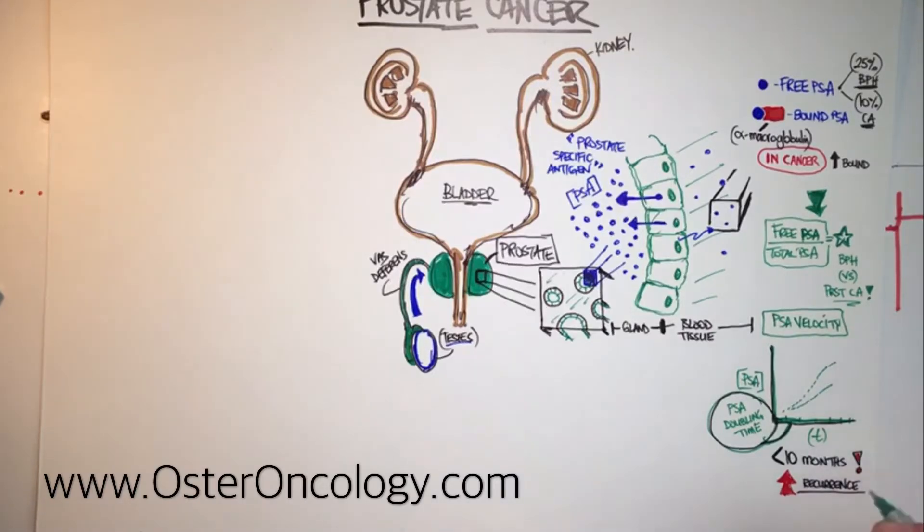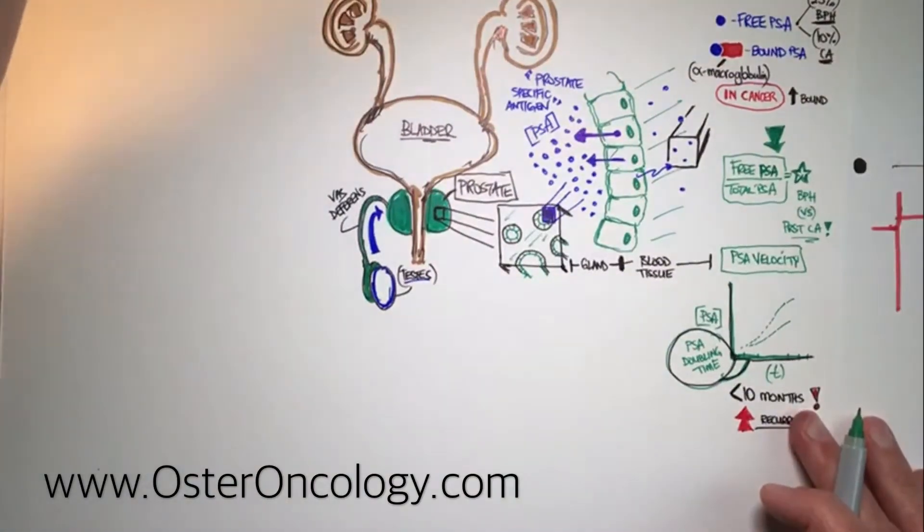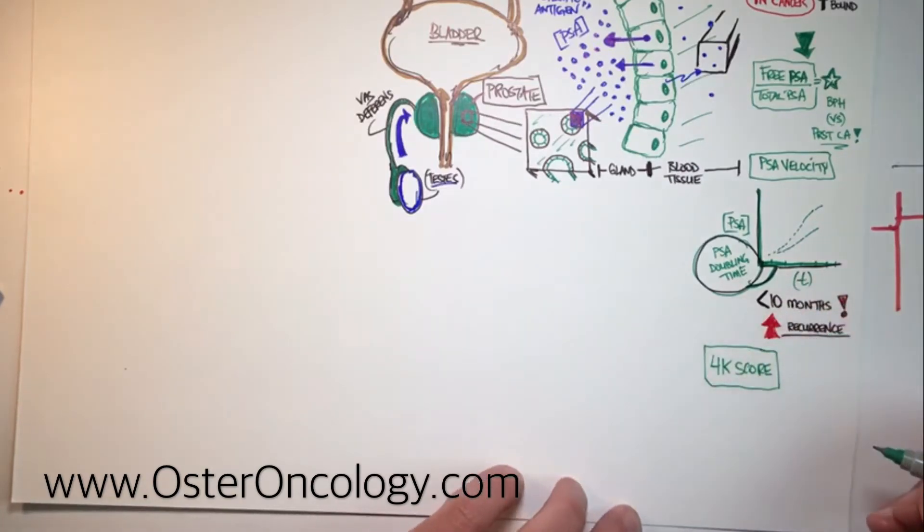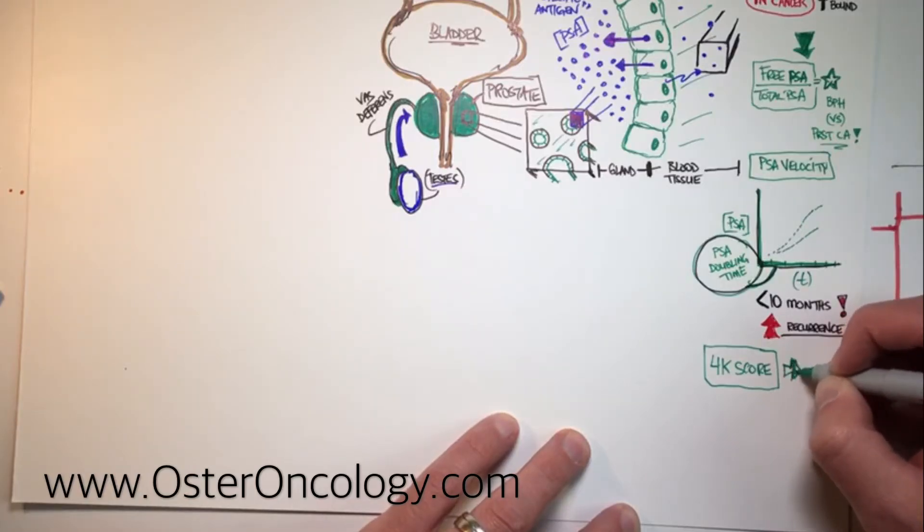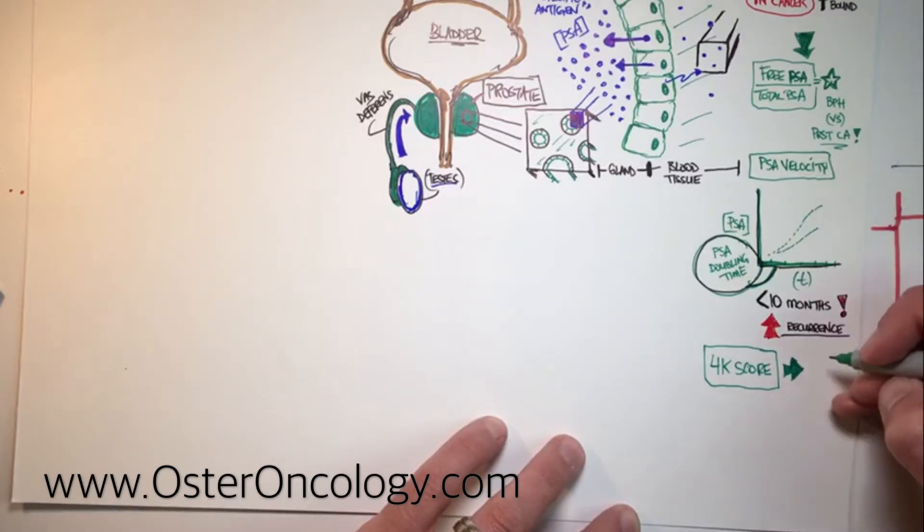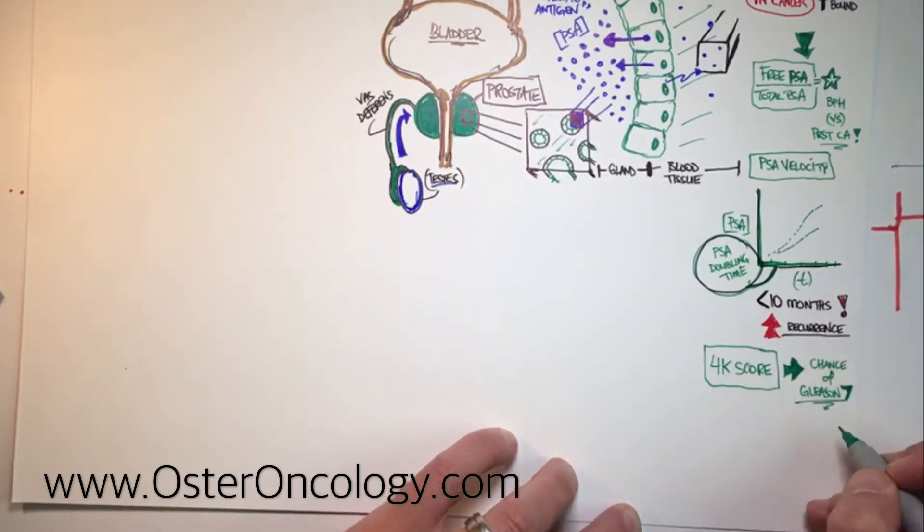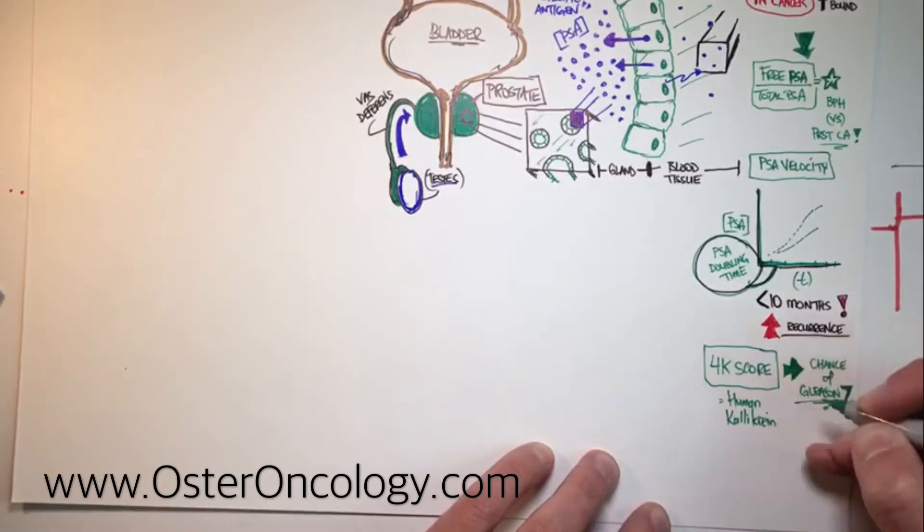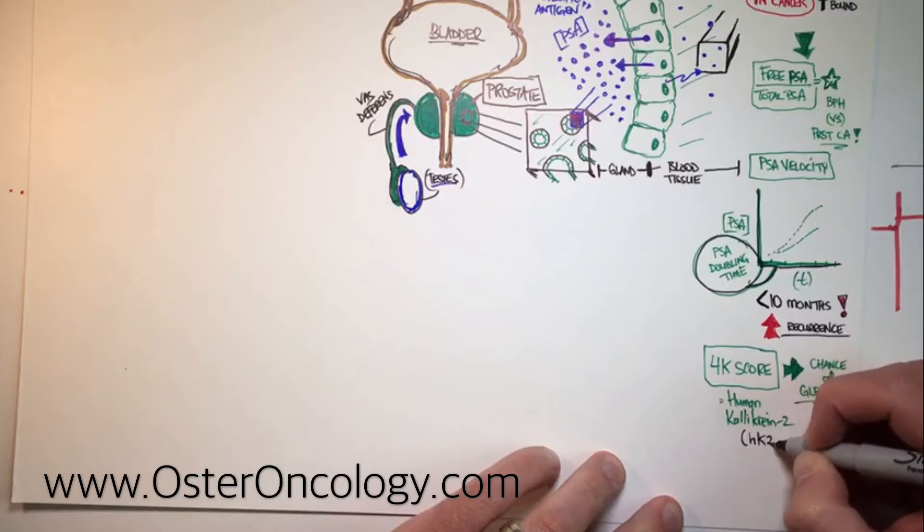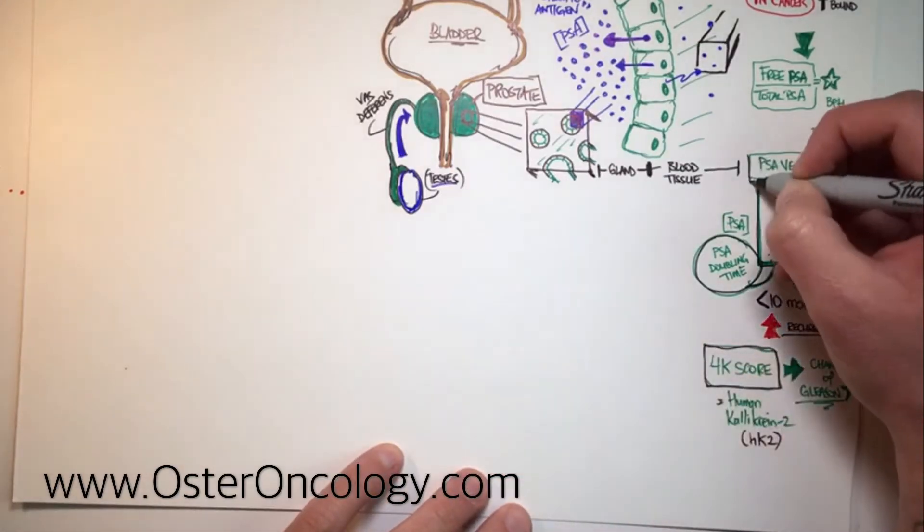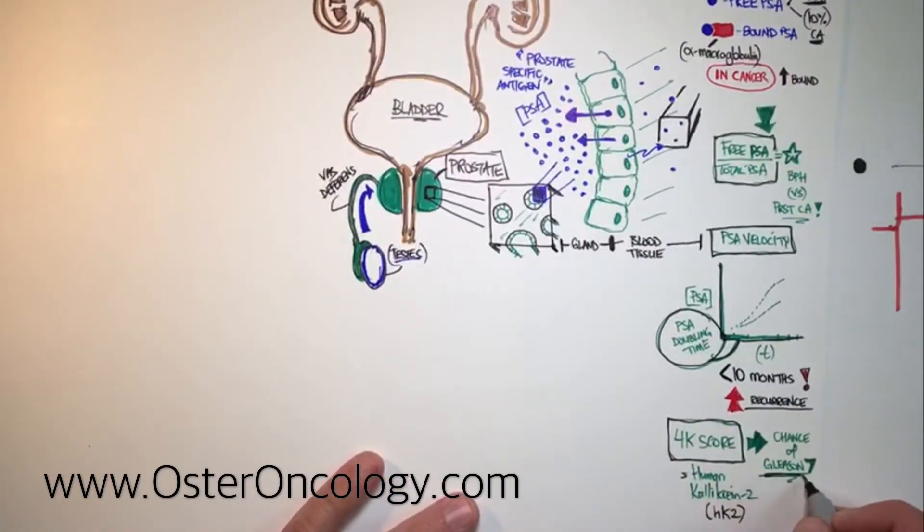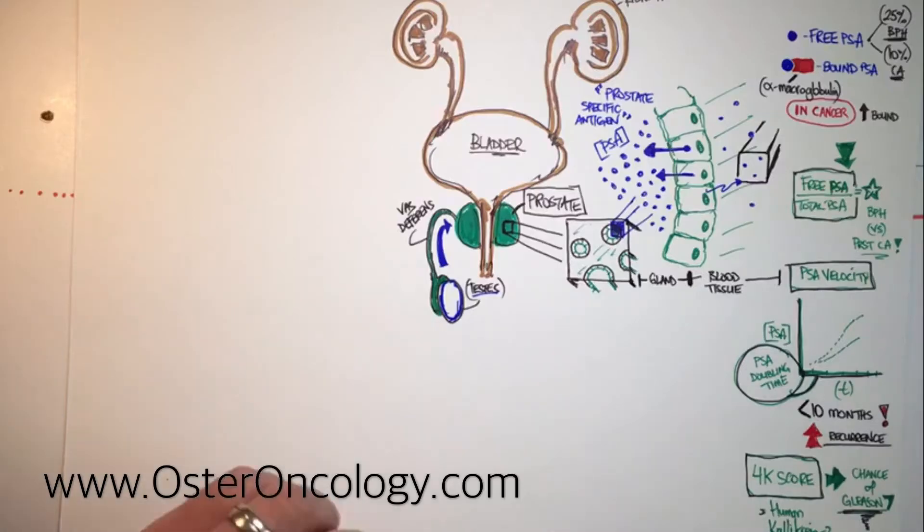Another test that may be run by your oncologist is something called the 4K score. Now the 4K score is a test that allows us to predict the chance that we're dealing with a Gleason score of 7. I'm going to talk to you about what a Gleason score is in a second. We'll unpack Gleason score. But you can run your 4K score as well and this is done prior to a biopsy. It's a blood test as well and it tests something called the human kallikrein 2 or HK2, and when we see that increase in measurement then it gives us an indication that we may be dealing with a Gleason 7 or above compared to a Gleason 6, which makes a big difference in terms of your treatment and what will be recommended to you. So that can be done before a biopsy is run.